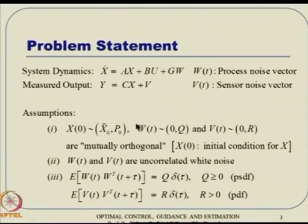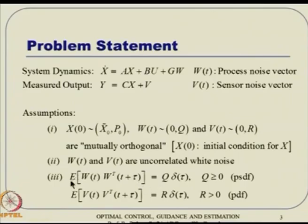What about w and v? Both w and v are characterized as zero mean. w has Q as the process noise covariance and v has covariance R. That means the expected value of w·wᵀ turns out to be Q times the Dirac delta function, and similarly the expected value of v·vᵀ turns out to be R times the Dirac delta function.